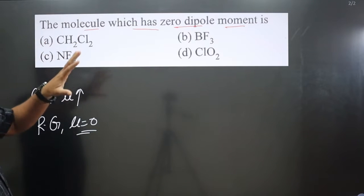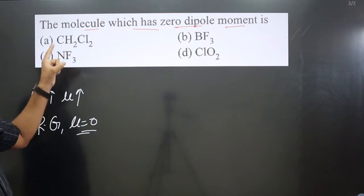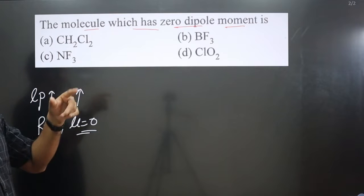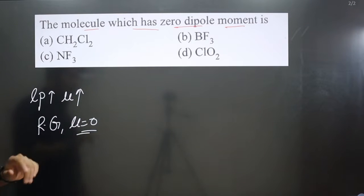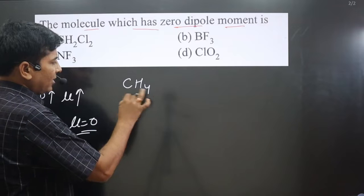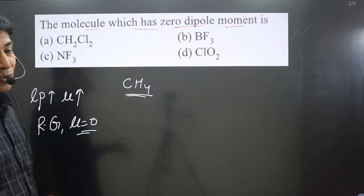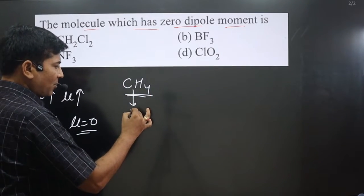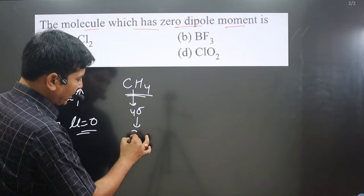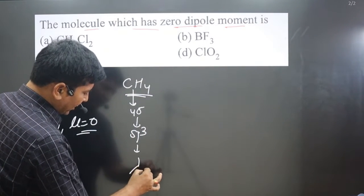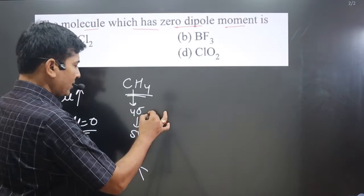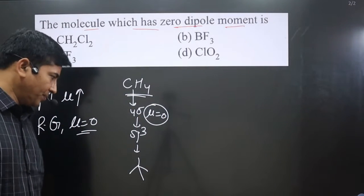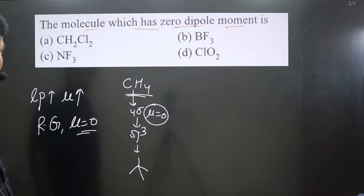Let's look at option A: CH₂Cl₂. Carbon is the central element with two hydrogen and two chlorine atoms. Consider CH₄ first — all substituent groups are the same. It has four sigma bonds, so hybridization is sp³ and we get regular tetrahedral geometry. Carbon does not carry any lone pairs, so dipole moment is zero.